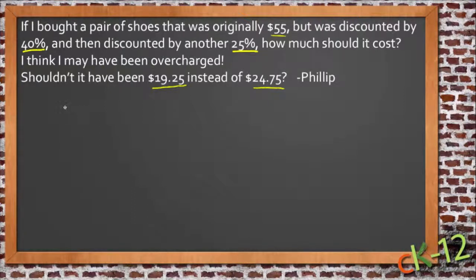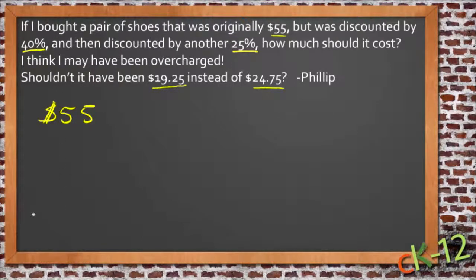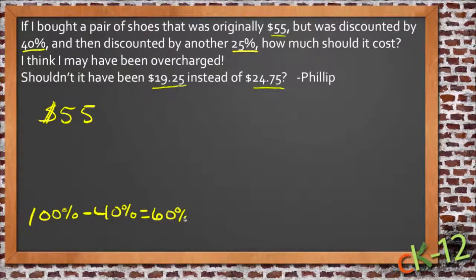We know that the original item was $55, and then that item was discounted by 40%. So if it was discounted by 40%, then what was remaining was 60%. If you take 40% away from the total price — the original price was 100%, and we take away 40% — then we get 60%. So if it was discounted by 40%, you should have paid 60%, or 0.6. Does that make sense?